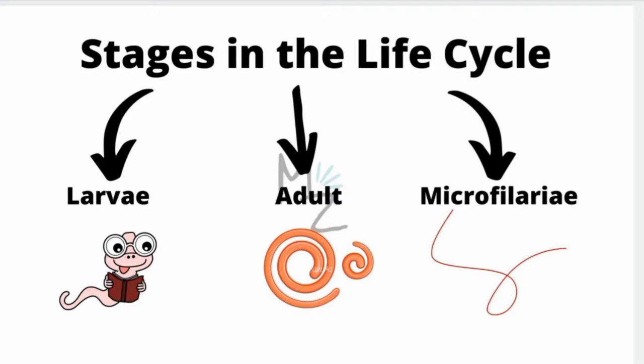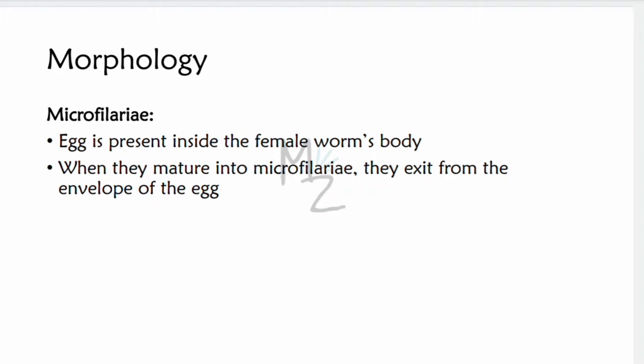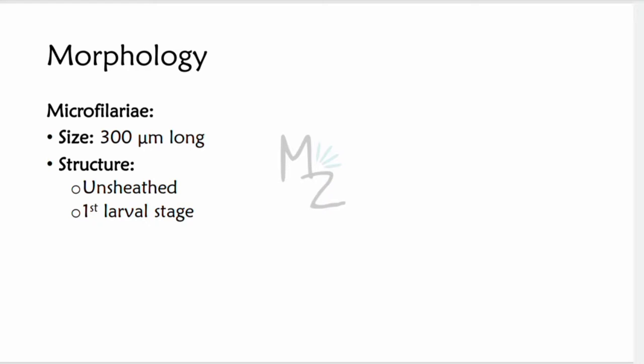There are certain stages that exist in the life cycle of Onchocerca. First is larvae, which gets converted into adults; then adults release microfilariae — these are thread-like organisms. Regarding morphology, the egg is present inside the female worm's body. When they mature into microfilariae, they exit from the envelope of the egg and are released into the human body. Microfilariae are 300 micrometers long. When they cast off their sheaths, they are termed unsheathed.